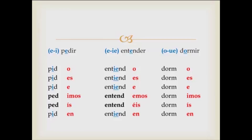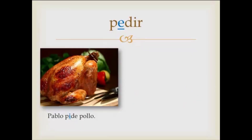Dormir, to sleep: duermo, duermes, duerme, dormimos, dormís, duermen. And that's what these three categories of stem-changing verbs will look like. I'll give you some examples in a sentence. Pablo pide pollo — Paul orders chicken. Note that it's pide, not pide with a different stem.